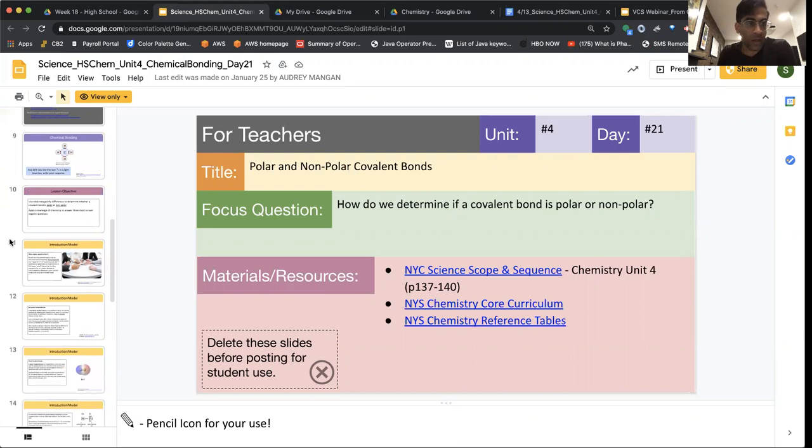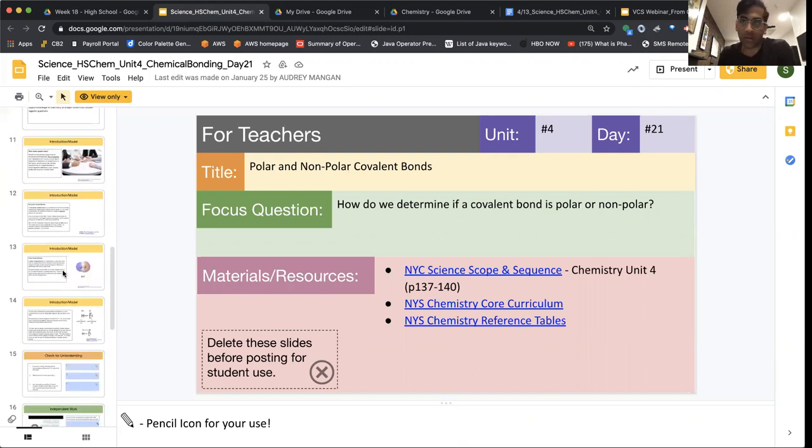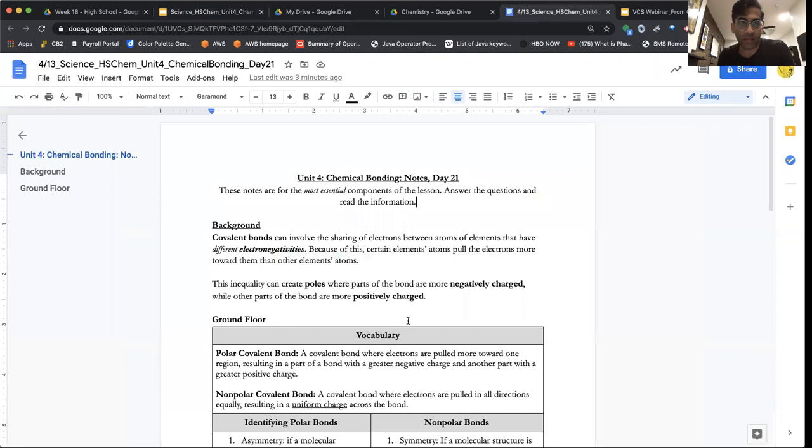We call those attractions when they appear in bonds and they affect different elements in the bonds unequally, we call these bonds polar covalent bonds. The first resource that I have for you is just a little bit of background. And so I say that covalent bonds involve the sharing of electrons between atoms of elements that have different electronegativities. This occurs sometimes, particularly when they are asymmetrical and they involve different elements.